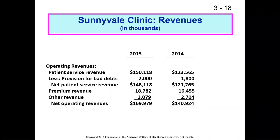Your textbook has the Sunnyvale Clinic example, so you can line up this presentation with what's in the book. The operating revenues portion of the income statement for Sunnyvale Clinic shows two years — it's typical to present two or more years so you can compare how things are changing over time. Sunnyvale is a made-up clinic, and its top-line revenue is patient service revenue: they're seeing patients and sending out bills or collecting cash.